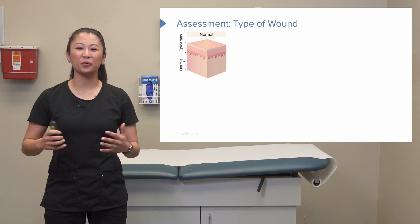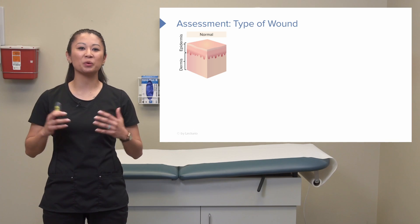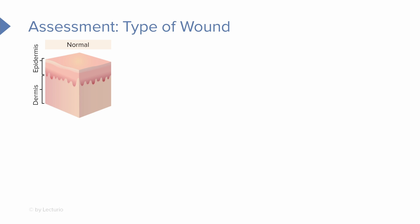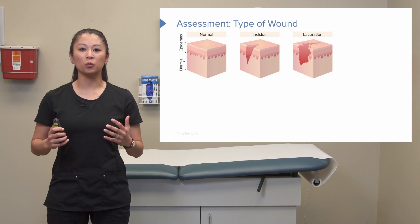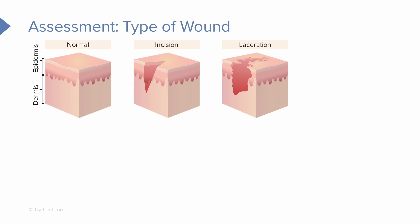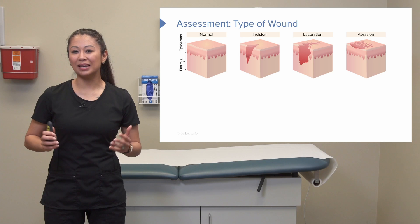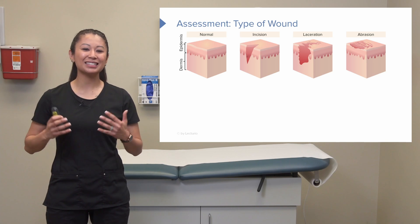Now let's take a look at the different types of wounds, which is important because it determines how we treat them. Normal skin integrity is what we want to see — the epidermis is intact. An incision wound has clean approximated edges and is typically post-surgery, such as on a patient's hip, knee, or back. A laceration wound involves tearing of the skin, usually from some sort of trauma. An abrasion is more of a scrape — like falling off a bike and scraping your elbows.